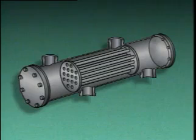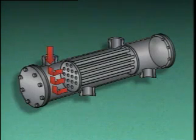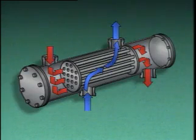In a parallel flow heat exchanger, the shell-side fluid and the tube-side fluid move in the same direction. In this heat exchanger, the tube-side fluid passes through the tubes in this direction and the shell-side fluid passes around the tubes in the same direction.